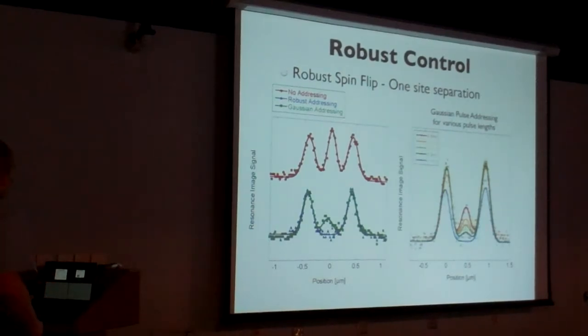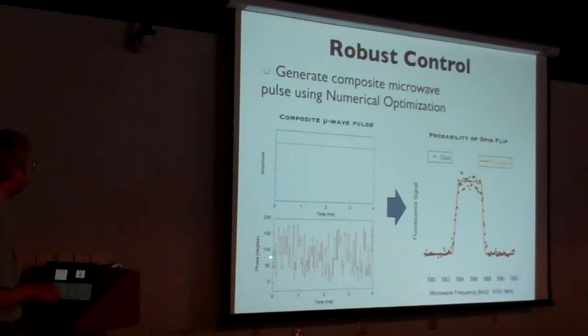Now the way we can actually design this pulse here - remember, the way you design these pulses is that you ask your computer to vary the parameters, that is all these phases, in order to optimize something. And what we asked the computer to do here was to optimize the population of the spin-up state after the pulse. Now that's not the same as, say, telling the computer to do a rotation around the x-axis by pi. Because doing a rotation around the y-axis by pi would accomplish the same thing.